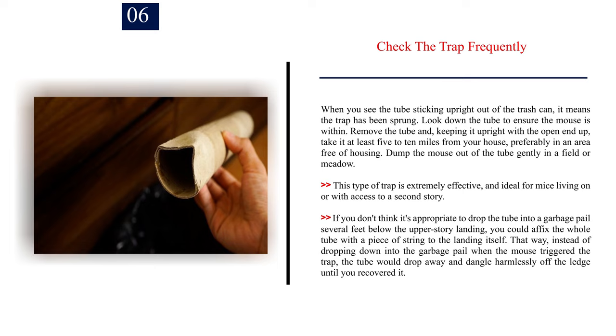Number 6: Check the trap frequently. When you see the tube sticking upright out of the trash can, it means the trap has been sprung. Look down the tube to ensure the mouse is within. Remove the tube and, keeping it upright with the open end up, take it at least 5 to 10 miles from your house, preferably in an area free of housing. Dump the mouse out of the tube gently in a field or meadow. This type of trap is extremely effective, and ideal for mice living on or with access to a second story.